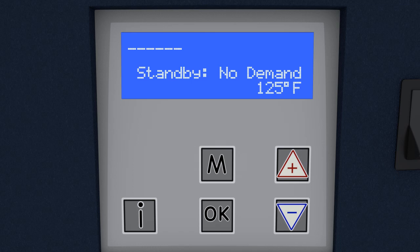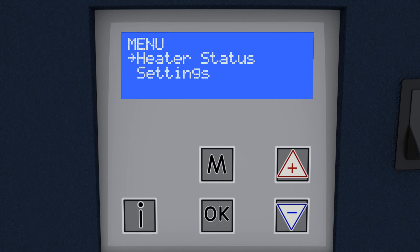Wait 30 seconds and then adjust the set point to a higher temperature. Press M to enter the main menu. Use the down arrow button to move the cursor to settings and press OK to select.